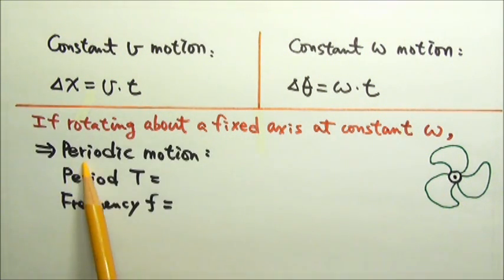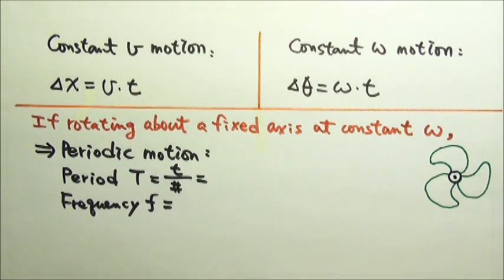For periodic motion, we can talk about period and frequency. By definition, period is the time it takes per event. In this case, it will be the time it takes for the fan blades to travel one circle.